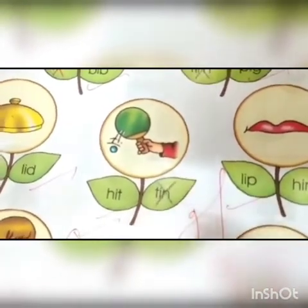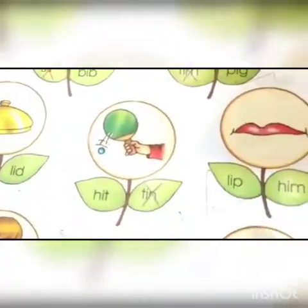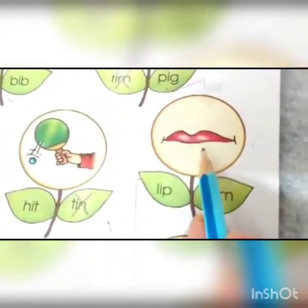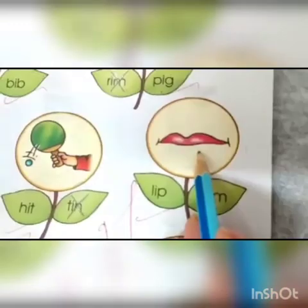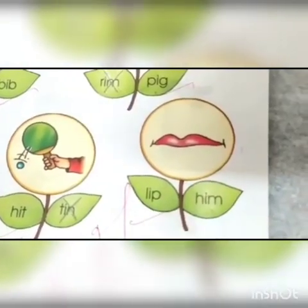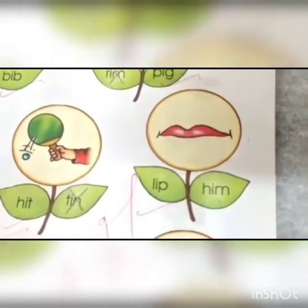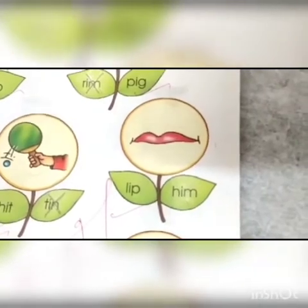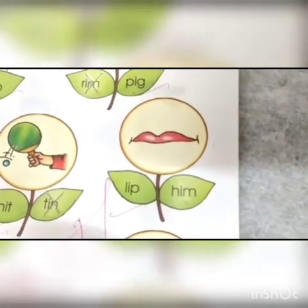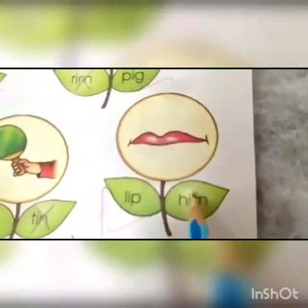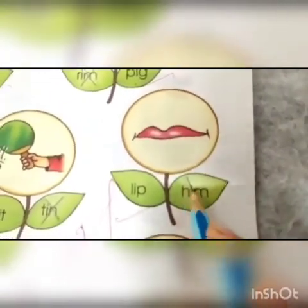Let's go to the next picture. Which picture is this? Lip. Which word does not belong to the picture? Him. Very good. Now you will close the word him.